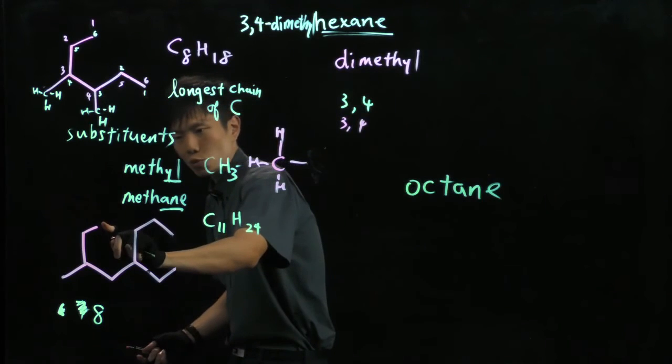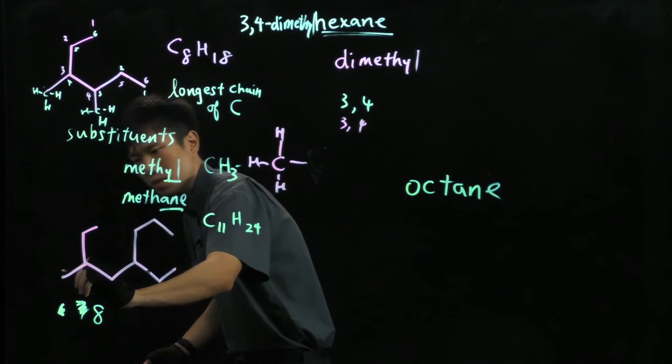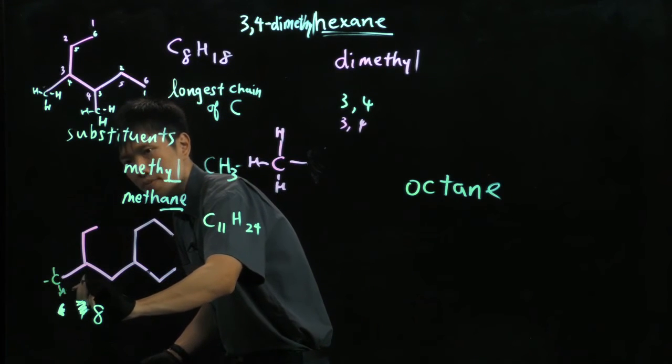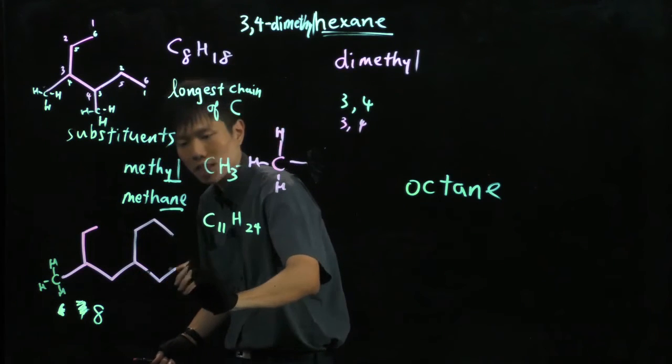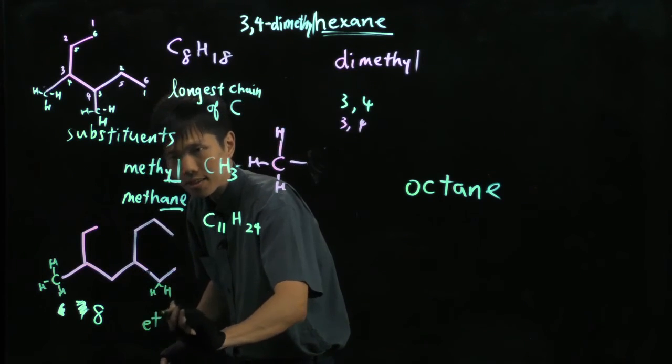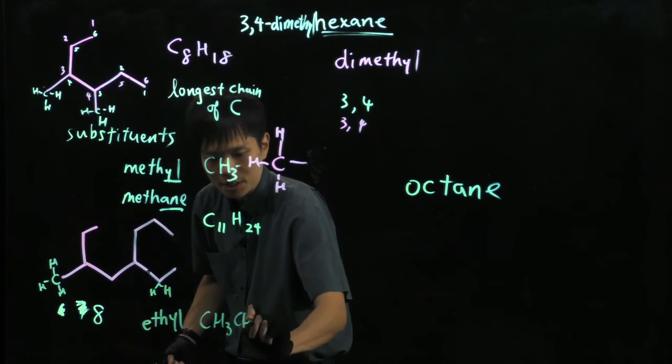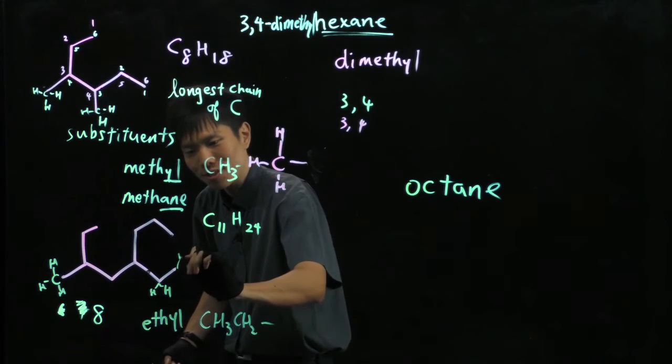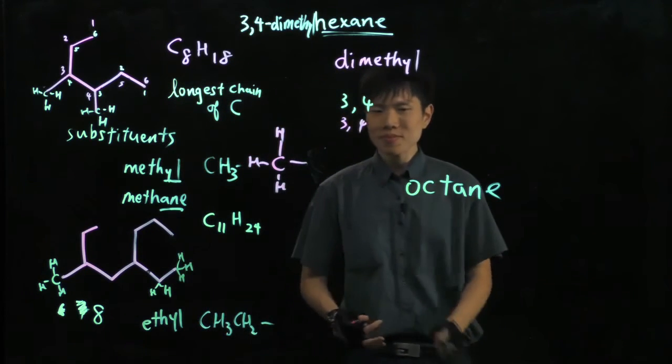And as you see, as you run my fingers here, what was not covered? This portion, which is the methyl group. And that portion, which is the ethyl group. Ethyl. CH3CH2. Right here. Not covered.